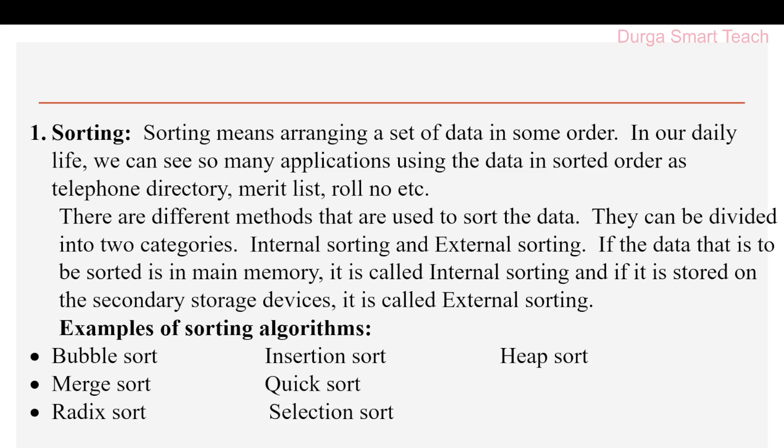The first one is sorting. Sorting is done using a step-by-step process. For example, if you want to sort five numbers, you first compare the first number with all the others, then the second number with the remaining ones, and so on — following a step-by-step process. Sorting is nothing but arranging a set of data or numbers in some order.